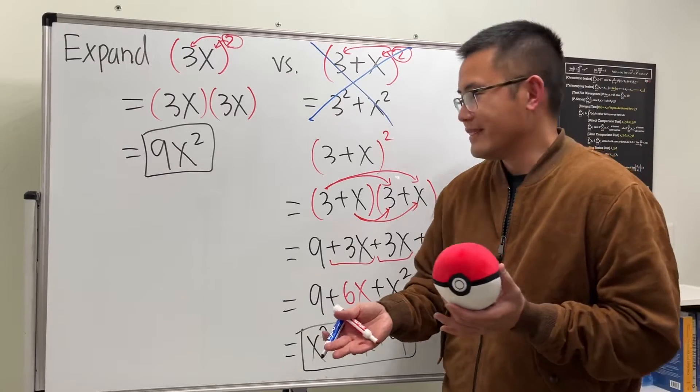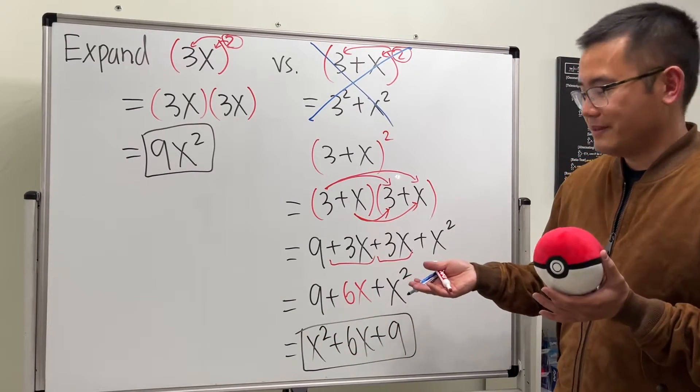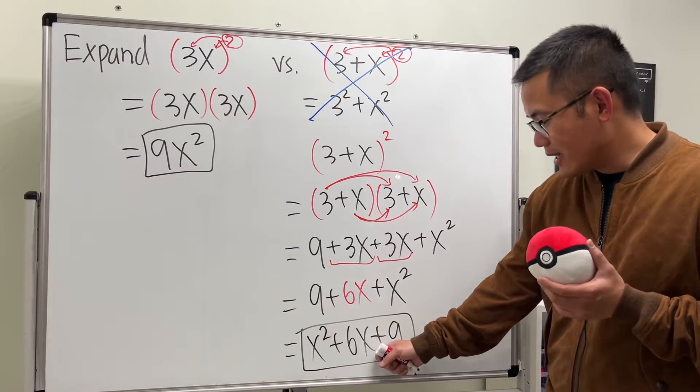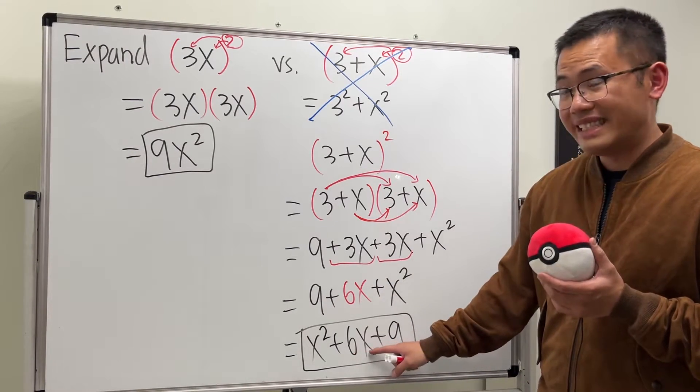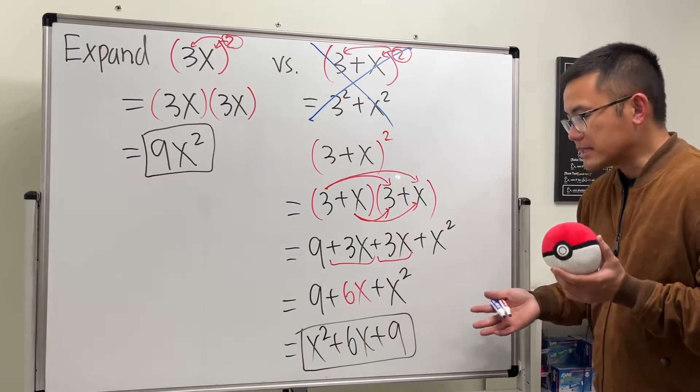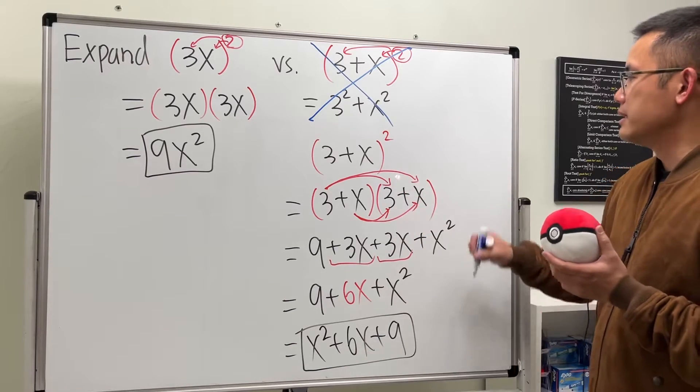And now as I said, this is like the little bonus of the box method. And by the way, notice this is the correct answer. We do have the 6x earlier we didn't, right?